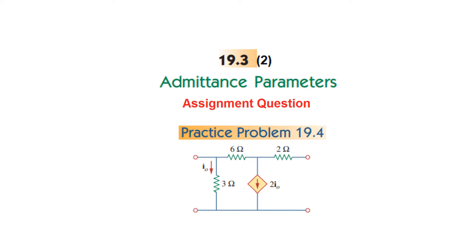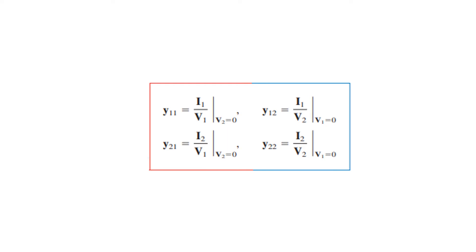Bismillahirrahmanirrahim. This video is about admittance parameters, made on the request of a student from Nigeria who has an assignment requiring practice problem 19.4 to be solved. Recalling the Y parameters, we have four admittance parameters: Y11 and Y21 are calculated when V2 is 0, and similarly Y12 and Y22 are calculated when V1 is 0.